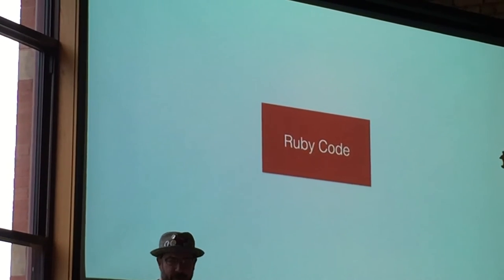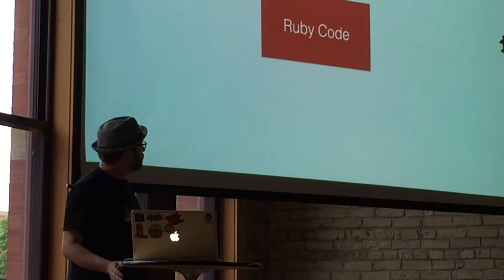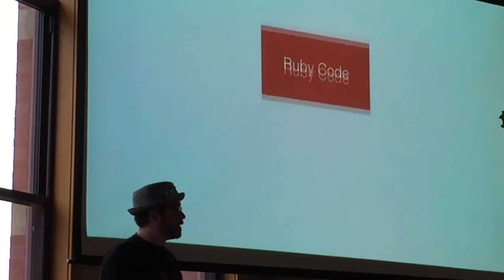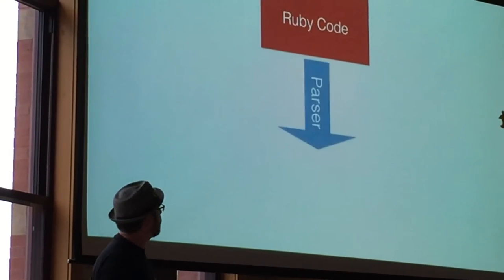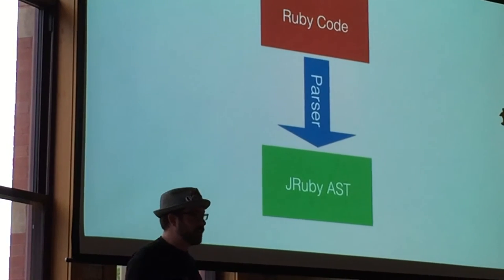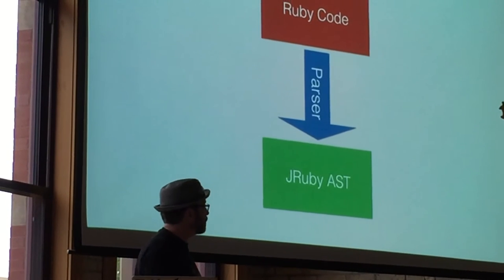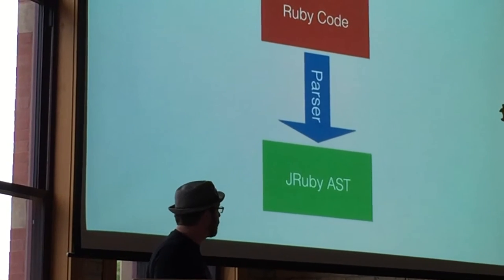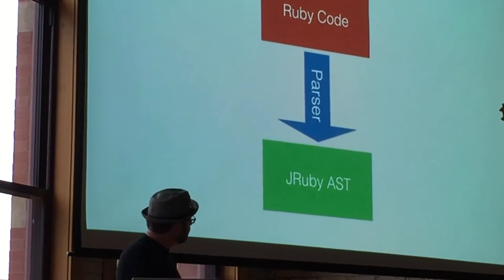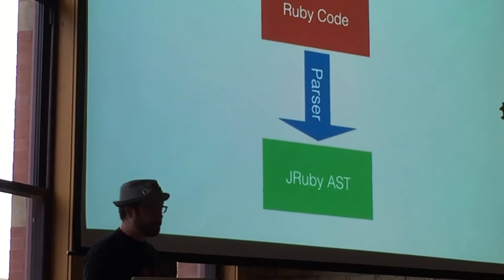So I'll back up a little bit and talk about how the JRuby 9000 runtime is structured. So we have our Ruby code that comes in. And then we're going to take this Ruby code and we'll parse it and turn it into an AST. This is basically where we and Ruby 187 would stop. JRuby in 1.0 and CRuby in 187. This is it.